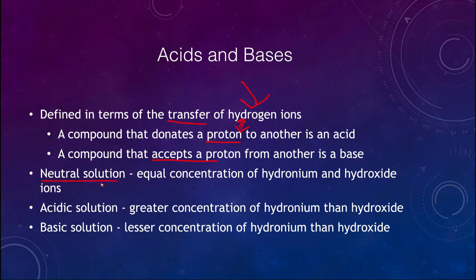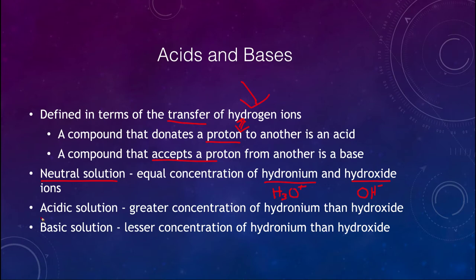We can also have neutral solutions, which are neither acid nor base. Those are ones that have equal concentrations of hydronium (H₃O⁺) and hydroxide ions (OH⁻), exactly equally balanced. An acidic solution is going to have more hydronium and less hydroxide, while a basic solution will have less hydronium and more hydroxide.